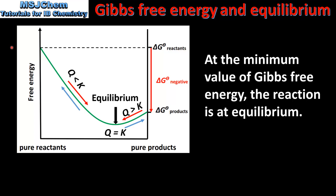Here we can see the change in free energy for a spontaneous reaction. The free energy of the reaction decreases until it reaches a minimum value. At this point the reaction is at equilibrium. After the point of minimum free energy, the free energy starts to increase and the reaction becomes non-spontaneous. So at the minimum value of Gibbs free energy, the reaction is at equilibrium.